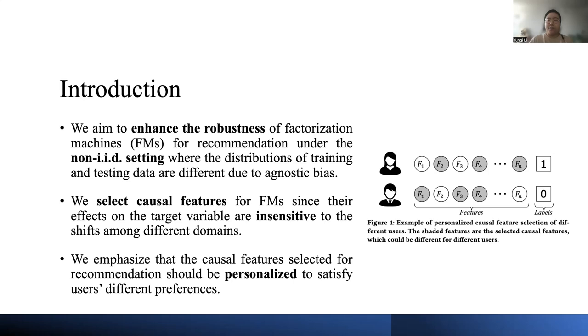For example, for one user, the causal feature for predicting whether he or she likes a coat may be the coat's price and comfort, but for another user, whether the coat is fashionable and popular may be more important.